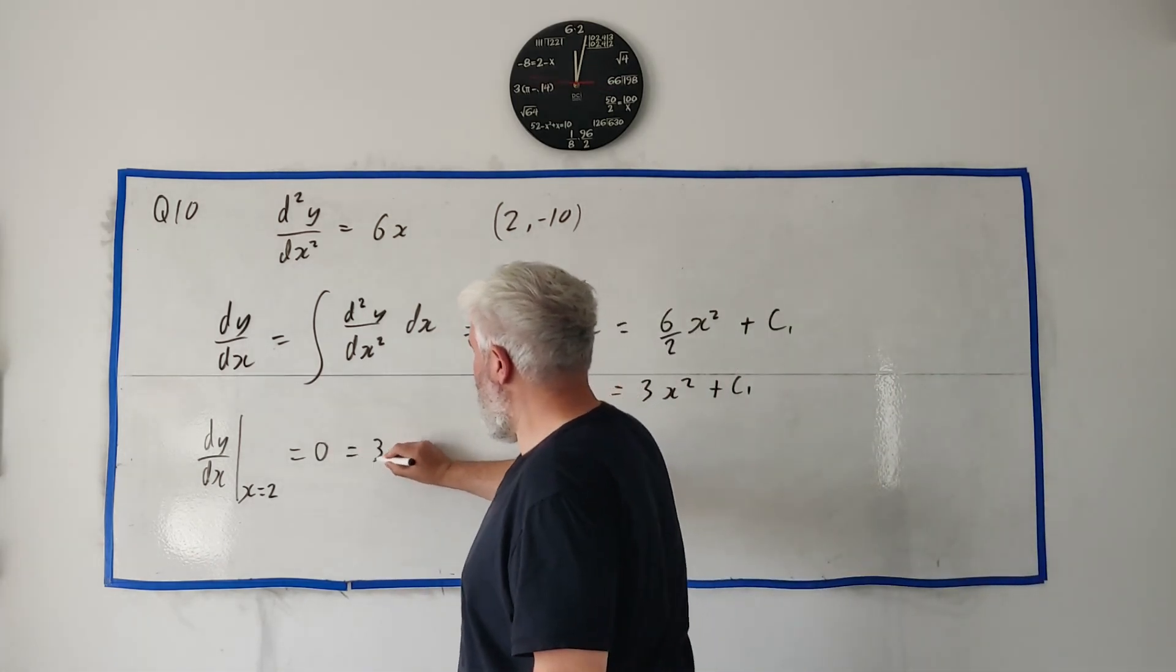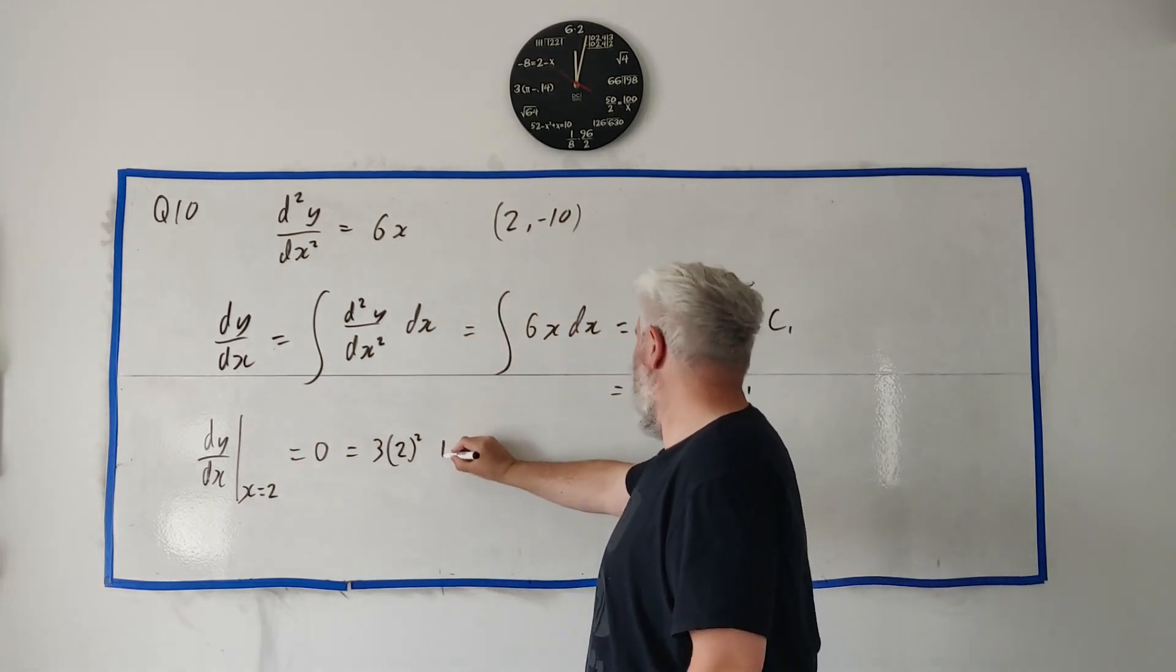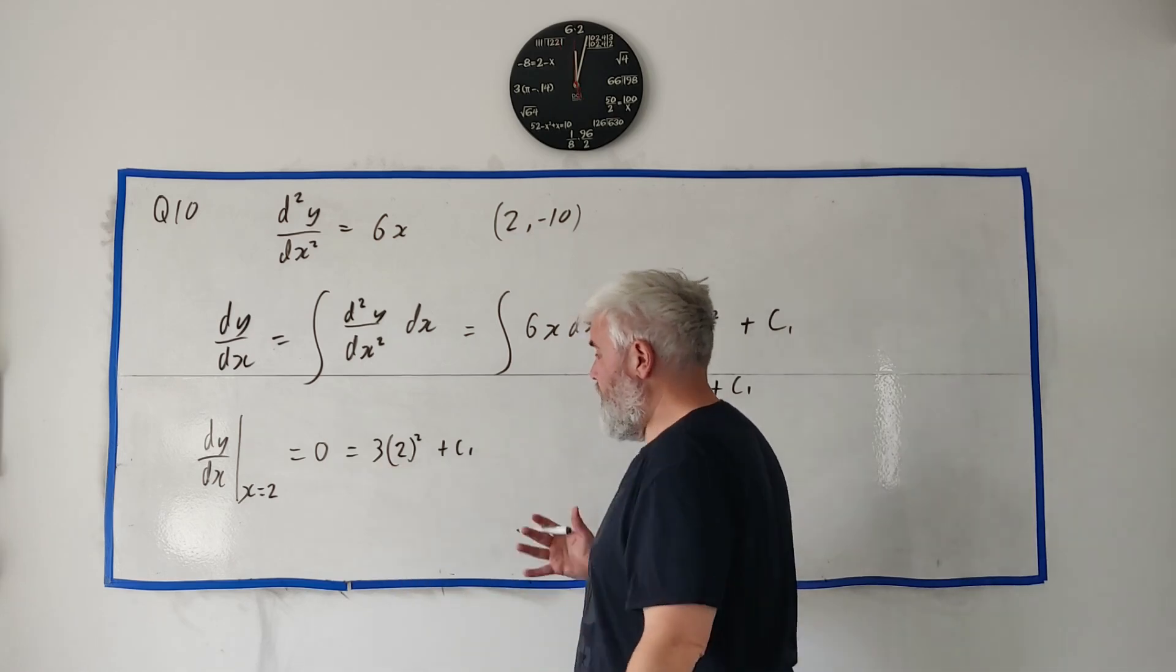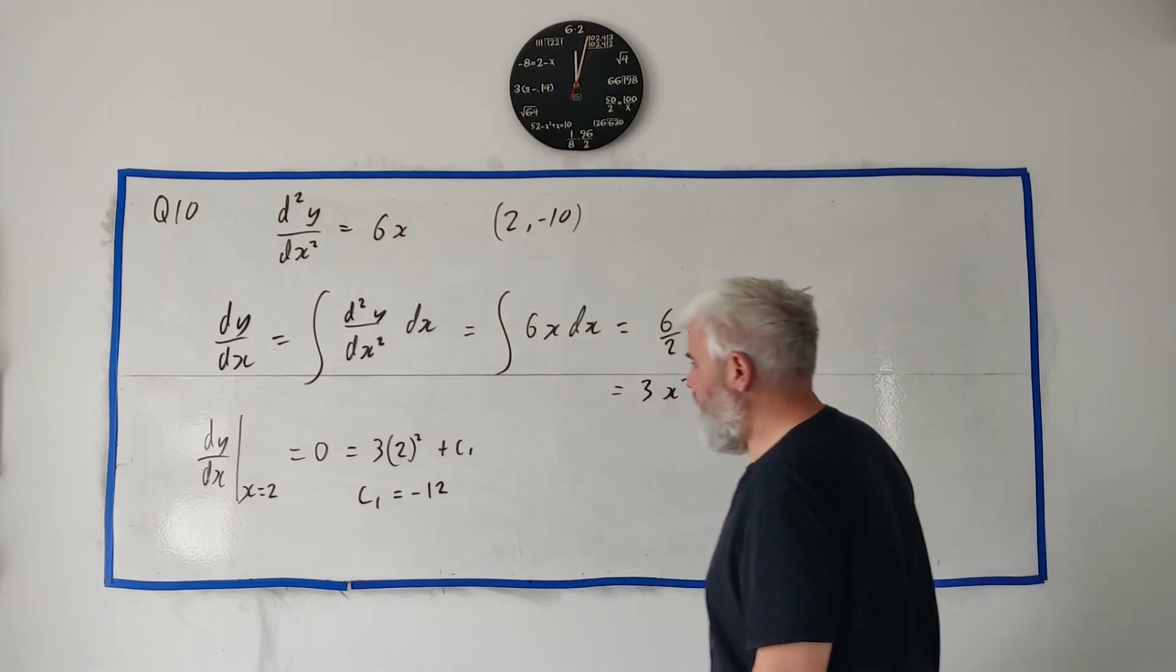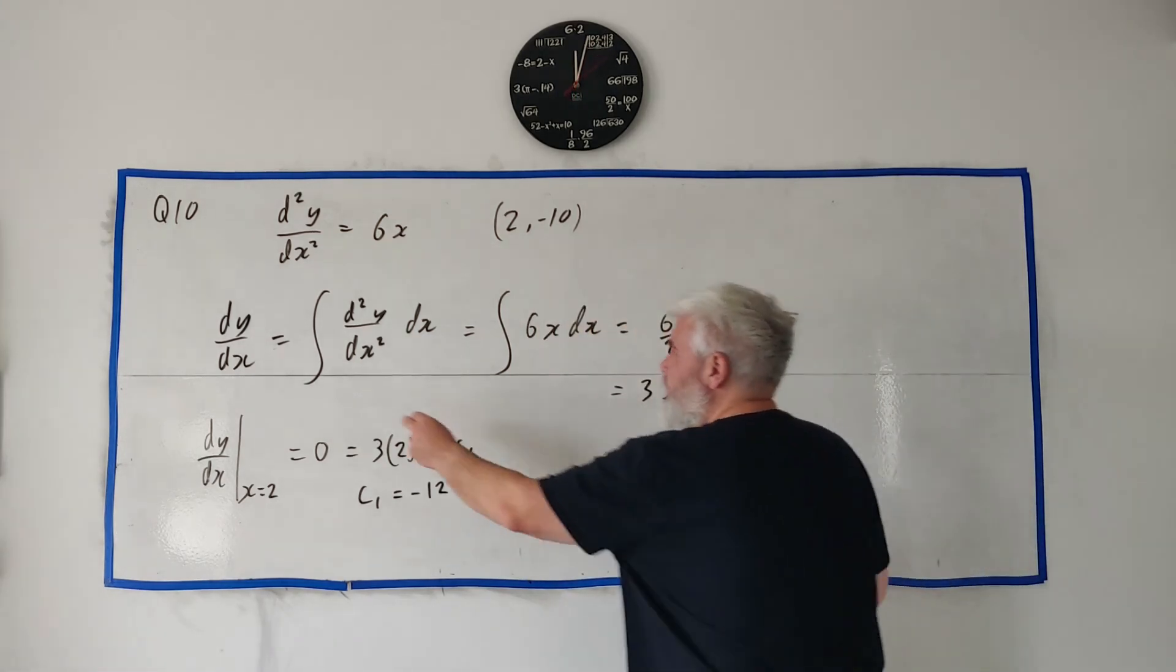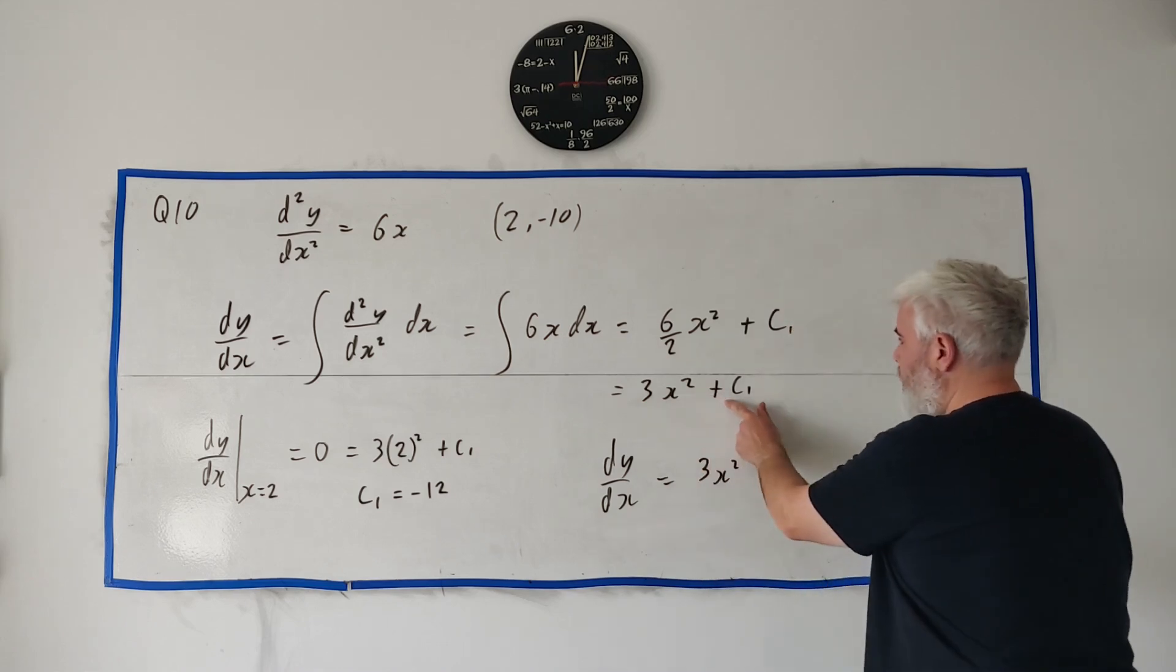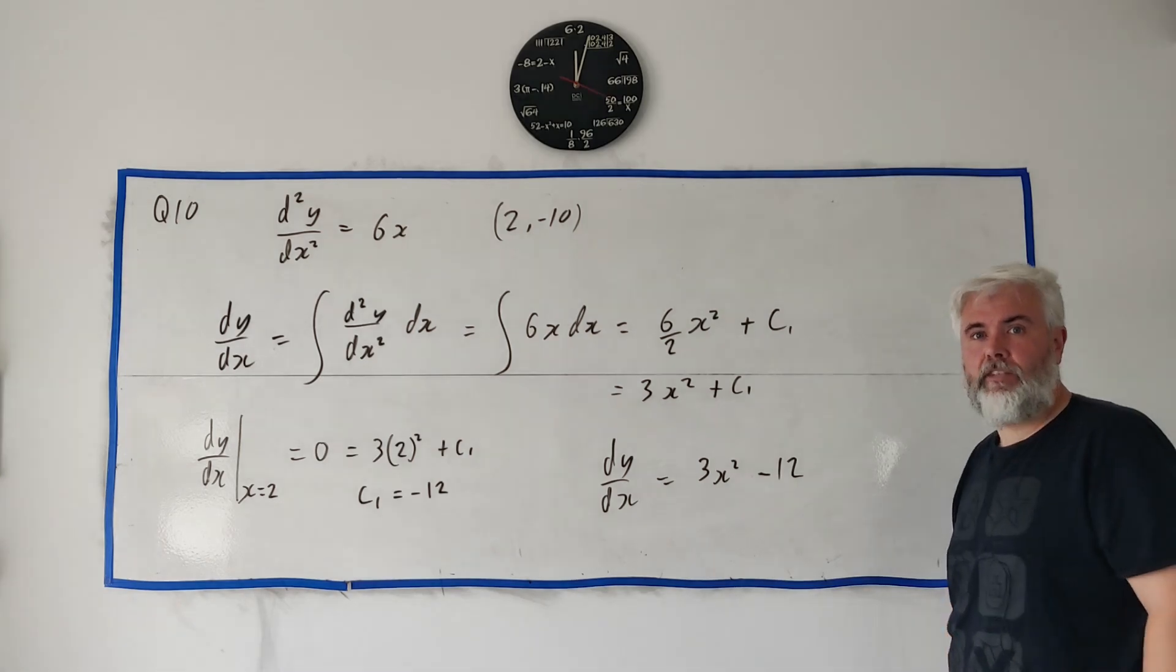So we can do that over here. This equals 3 times 2 squared. Remember x is equal to 2 now in this world, plus c1. 2 squared is 4. 4 times 3 is 12. Move it over. We end up with c1 is equal to minus 12. Still not quite finished. They still want to see all of this put together. dy/dx is equal to 3x squared minus 12. That's your full marks for part a.